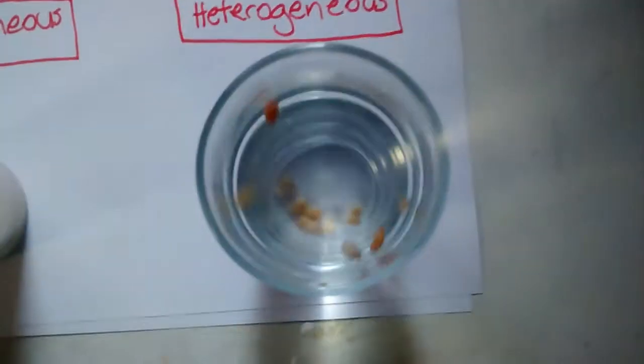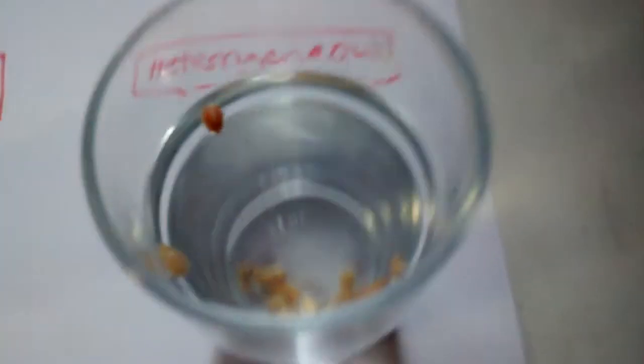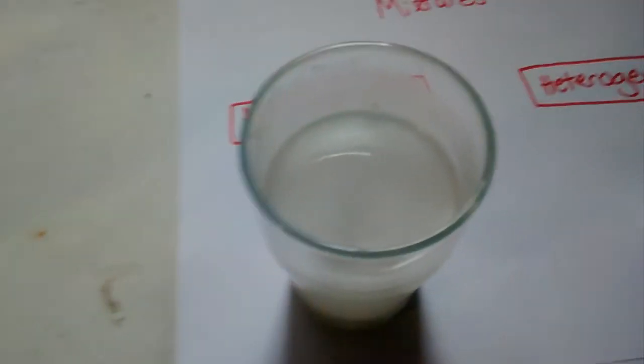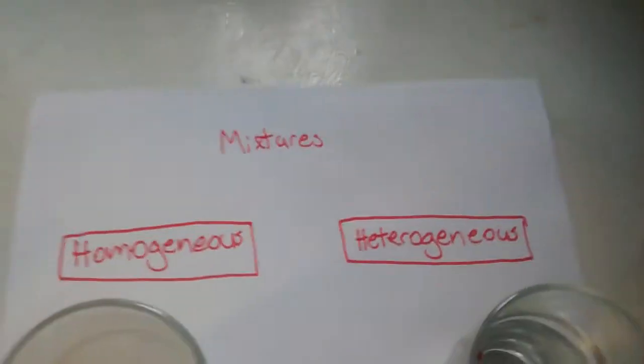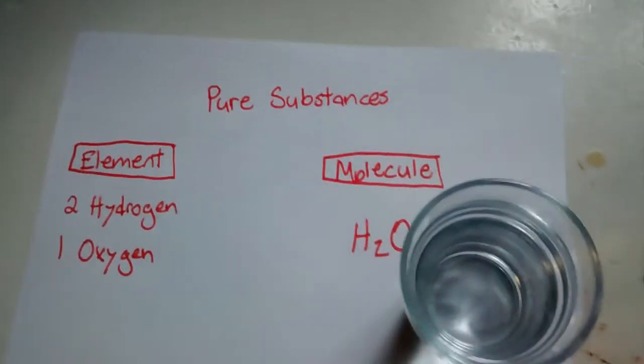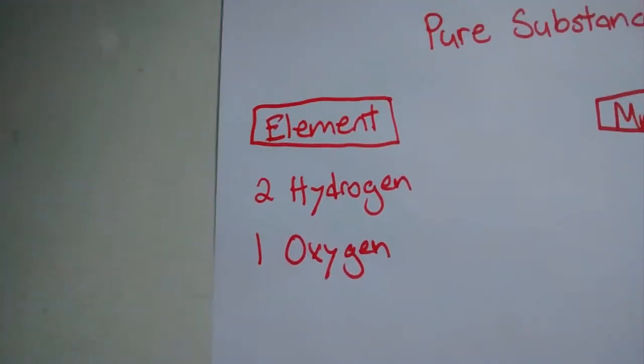So, again, we're working backwards. Heterogeneous, you can tell the difference between the two. Homogeneous, you cannot tell the difference. I can't pick out the flour or the water. Those are both mixtures. And in terms of pure substances, you have the molecule, which would just be water or it can be anything that's pure like salt or chemical solution or rubbing alcohol. Anything that's pure. And lastly, you have elements.